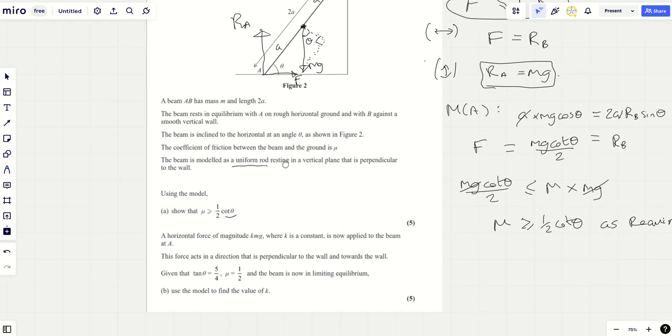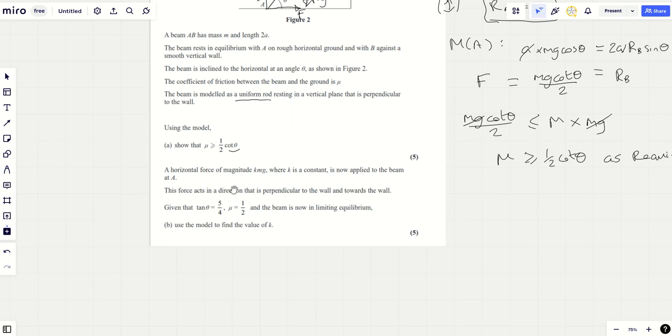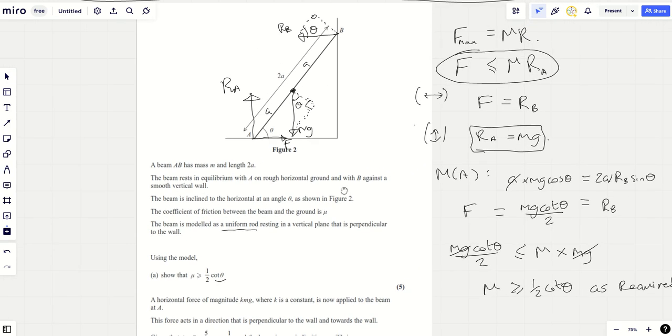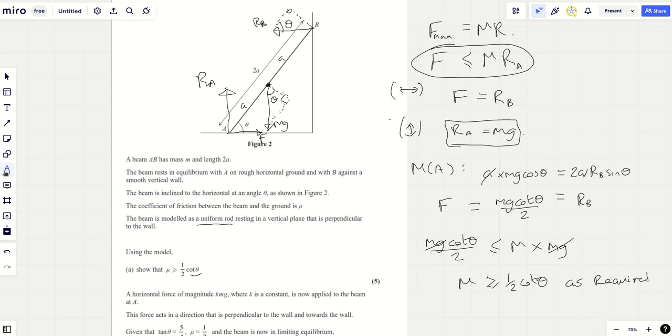Okay, Part B. What have we got here? A horizontal force of magnitude KMG is now applied to the beam at A. This force acts in a direction that's perpendicular to the wall and towards the wall. Well, we're going to have to draw this diagram out again. And the big thing here is, all of a sudden we've got a force, if you like, somebody kicking the ladder at the bottom with a force of KMG.